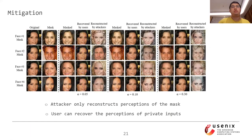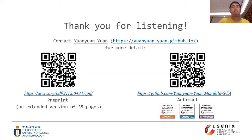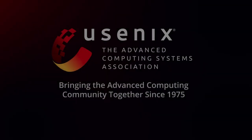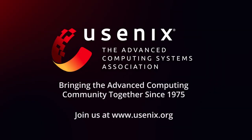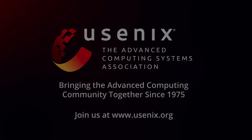Here I present some mitigation results of our perception blending. The reconstructed images of the attacker mostly retain the perceptions of the mask. In contrast, normal users can recover the perceptions of private inputs with negligible loss. Thank you for listening.